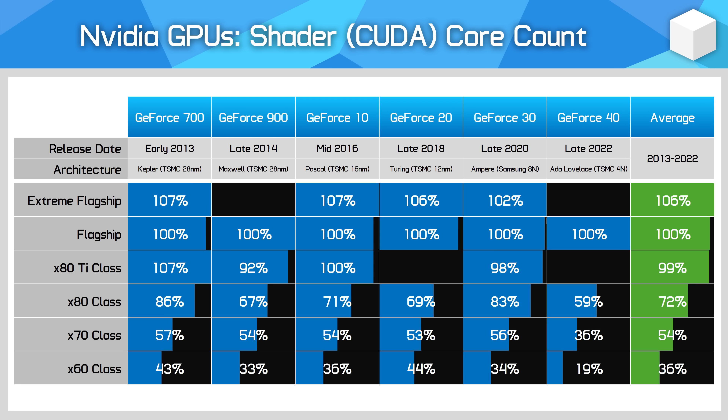Historically, we can also see that the 80 Ti tier is very close in its core configuration to the flagship. For example, the RTX 3080 Ti with 10,240 CUDA cores was almost an RTX 3090 with 10,496 CUDA cores. Over the years, this 80 Ti class has been NVIDIA's way to get almost the same level of performance as their best card, but in a better-value model.